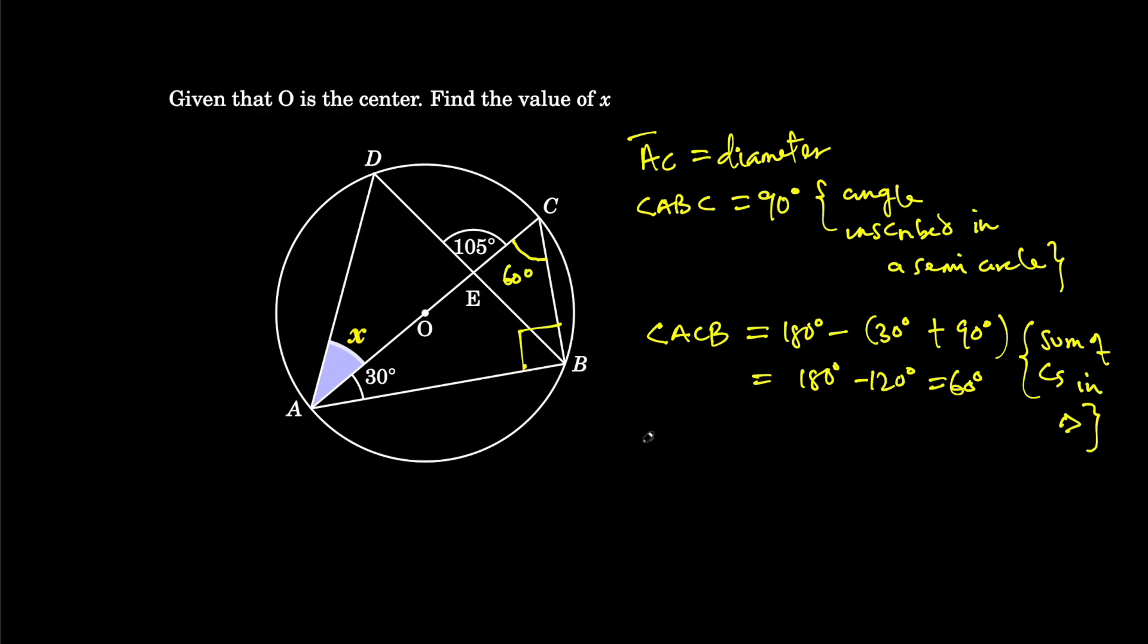Remember that angle ACB and angle ADB, that is the angle here and the angle here, are both equal to 60 degrees. The reason for that is they are angles in the same segment. So this is equal to 60 degrees.